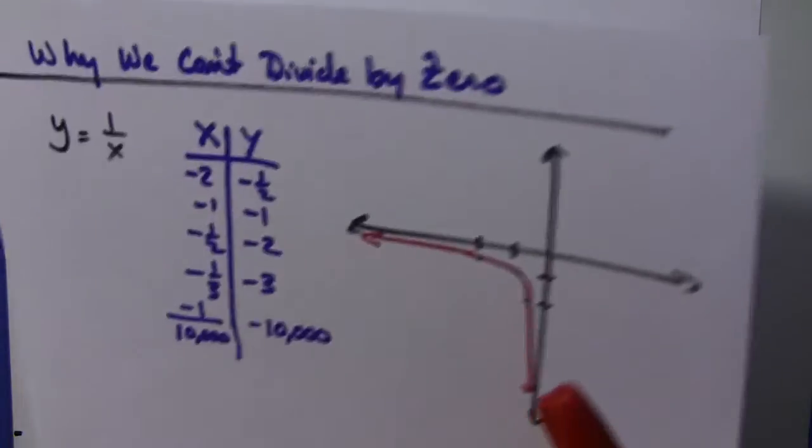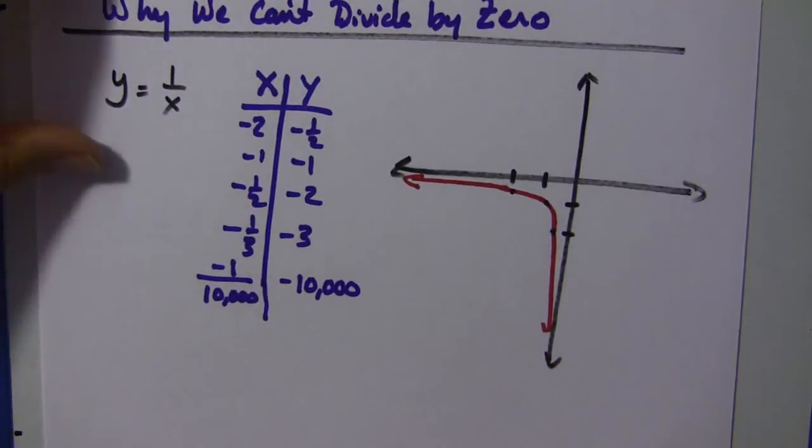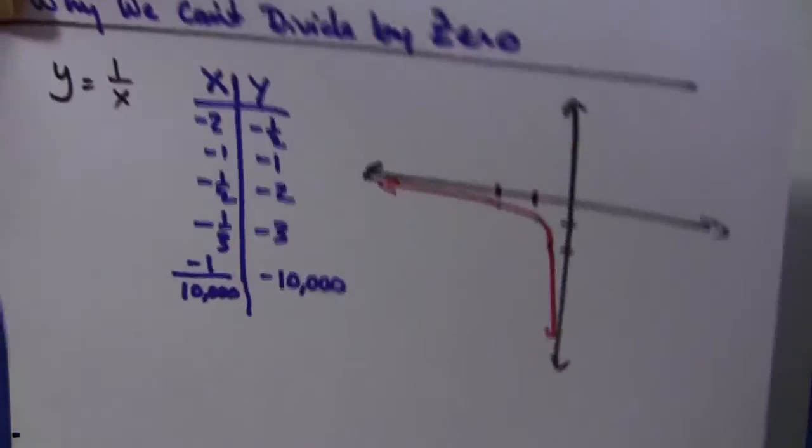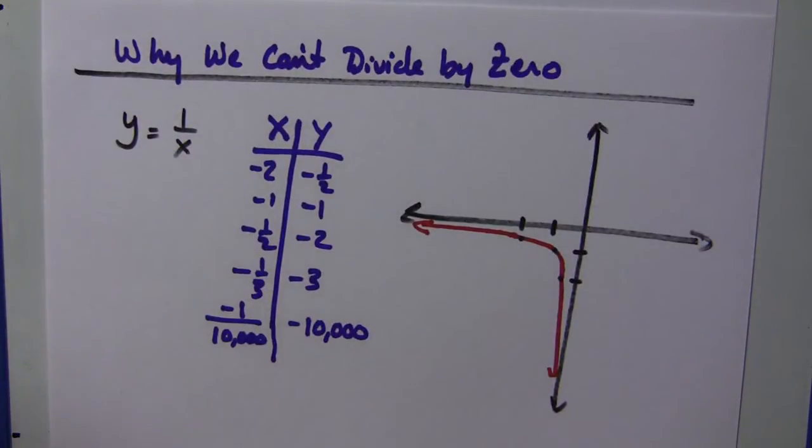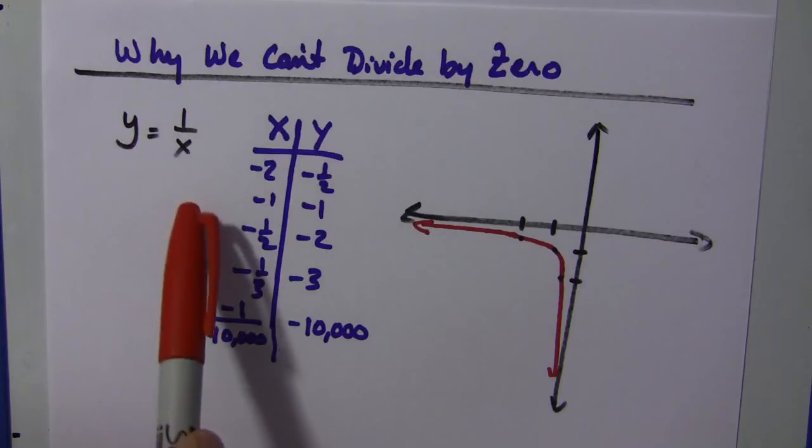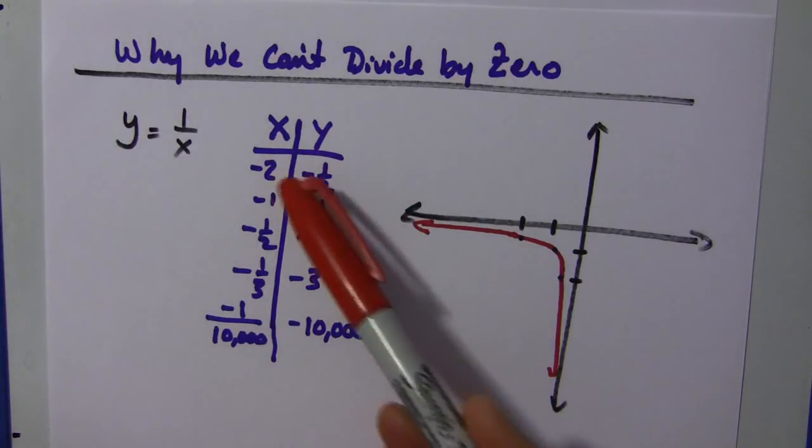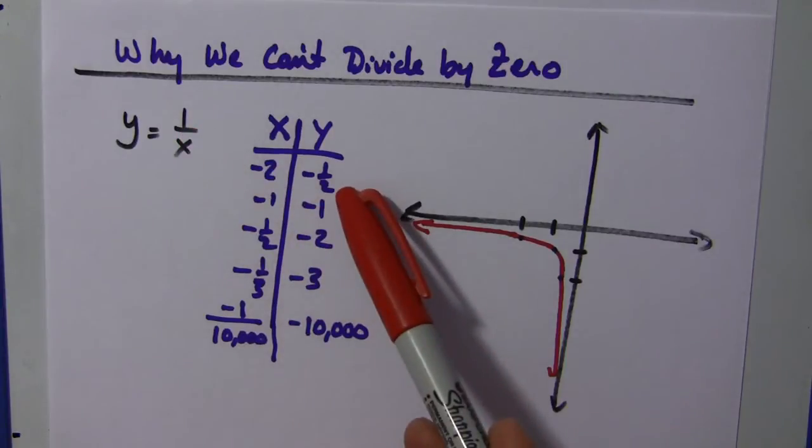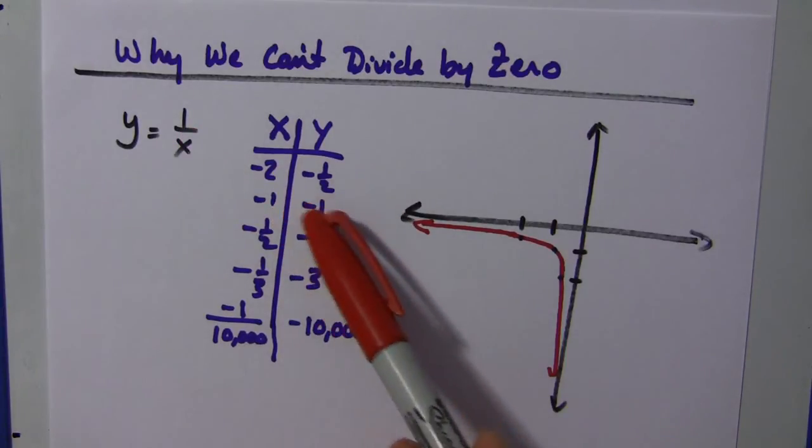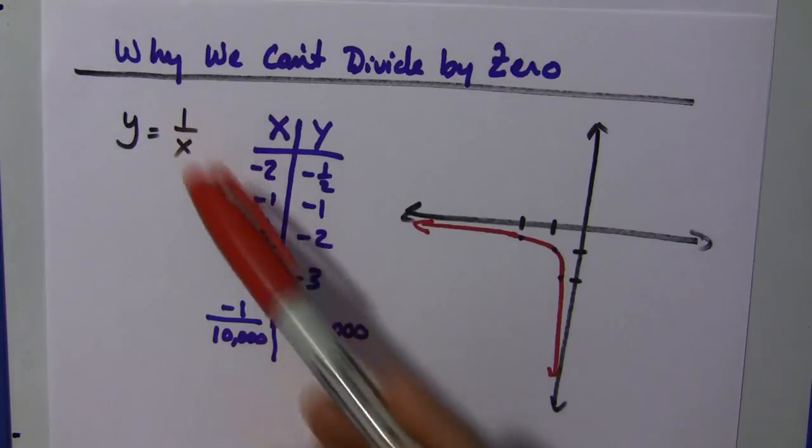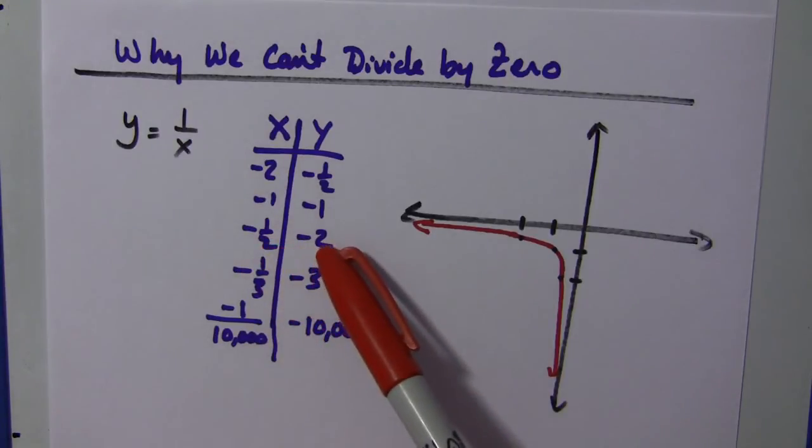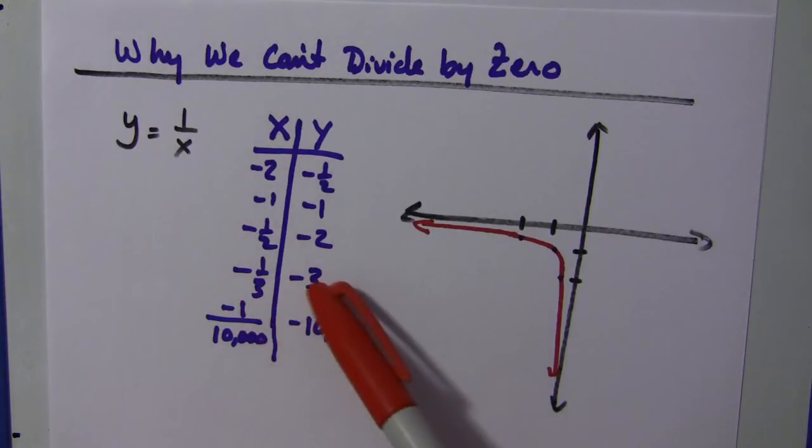And that is that when we take values of x that are negative, so the same equation, y equals 1 over x, we make a table of values x and y. When x is negative 2, then this becomes negative 1 half. When x is negative 1, this is negative 1. When x is negative 1 half, this is negative 2. Negative 1 third, we get negative 3.